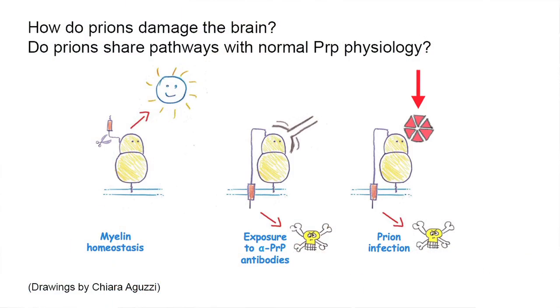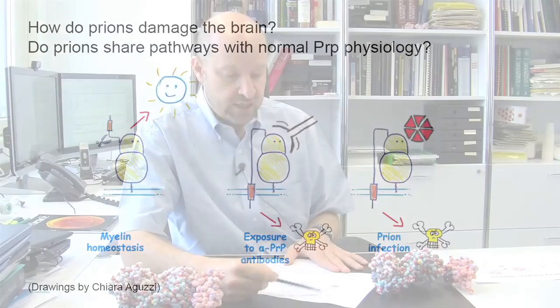However, the hypothesis is that when the pathological prion protein interacts with the normal prion protein — that is, when PRP scrapie comes in contact with PRPC on the cell surface — then the amino terminal tail will misfold and transmit a neurotoxic signal, which will eventually damage the neuron.